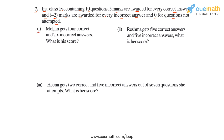Part 1 says Mohan gets 4 correct and 6 incorrect answers. What is his score? So Mohan gets 4 correct answers, and because each correct answer is awarded 5 marks — as told in the problem statement — Mohan will get 4 times 5, or 20 marks for his correct answers.